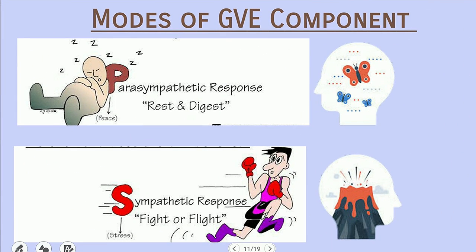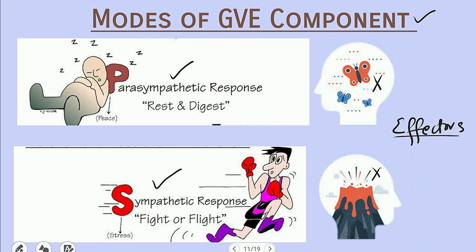Now I'll talk about the modes of the general visceral efferent component — the response of the autonomic nervous system. It is of two types, depending upon the situation. If we are in a peaceful condition, we will have a parasympathetic response. If we are in a situation of crisis, stress, or emergency, we will have a sympathetic response. The reason behind this division is that we want our effectors to work differently in these two situations.